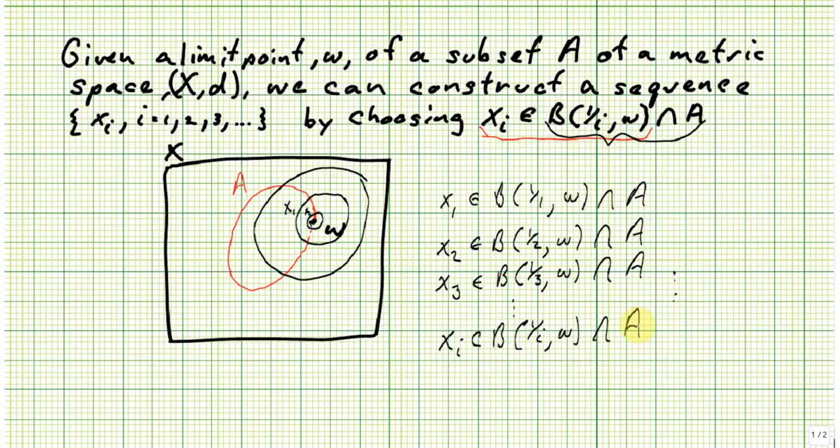And by this process, I can construct my sequence xi, i equals one, two, three, dot dot dot, with the limit as i goes to infinity of xi equal to w.